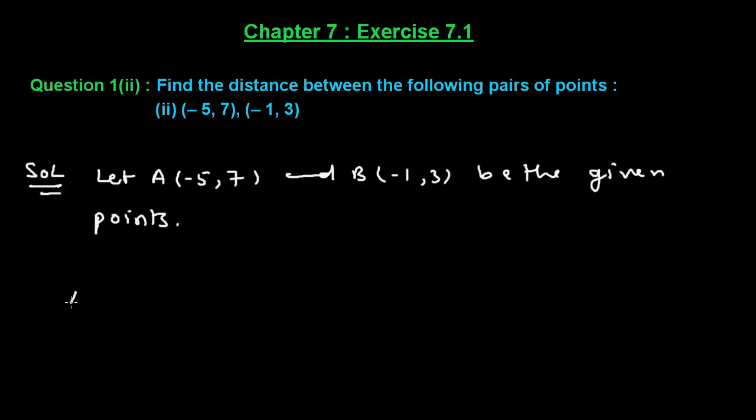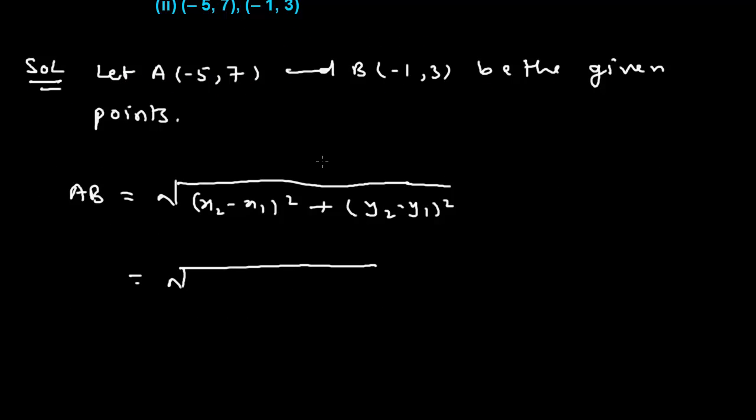That is AB equals to square root of (x2 minus x1) squared plus (y2 minus y1) squared. Here x2 is -1 and x1 is -5, so we shall subtract -5 from it and find the square of this value.